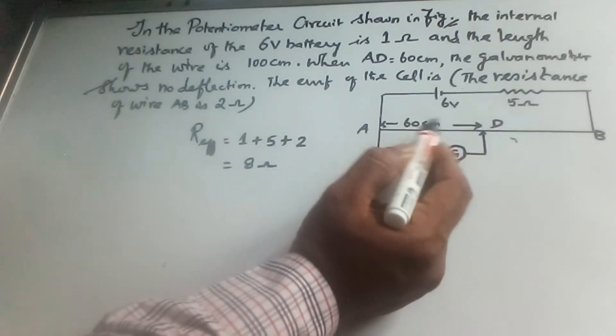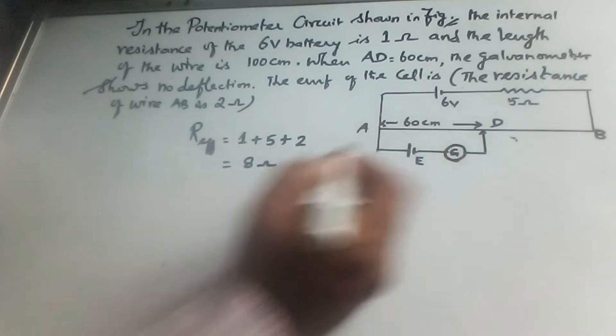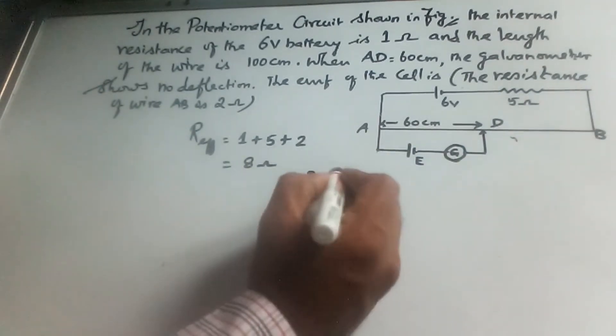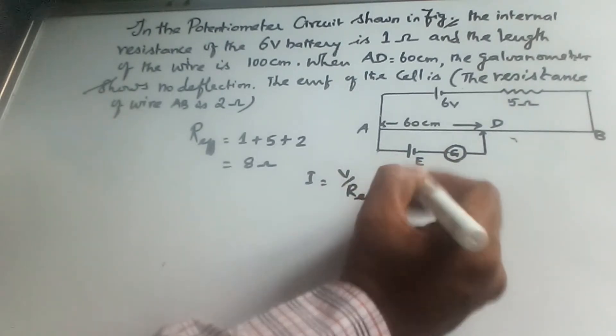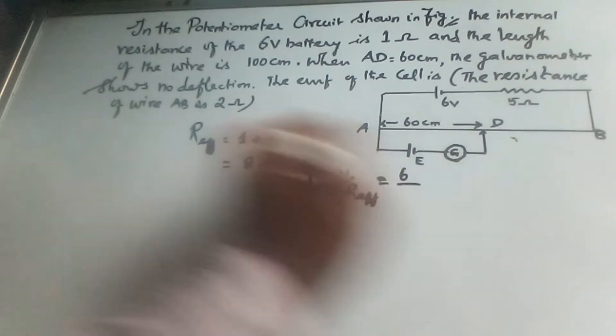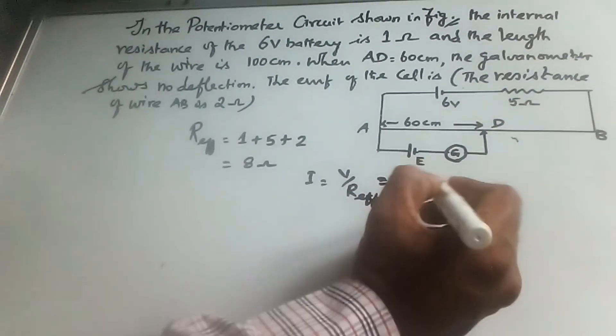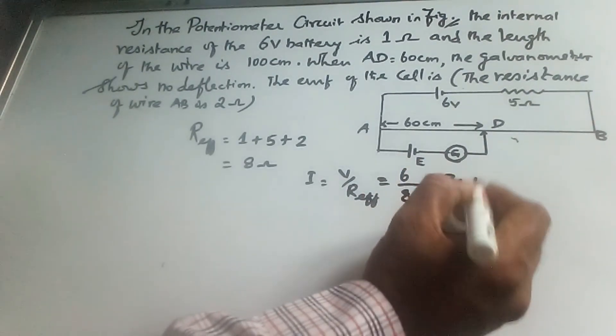The current I equals V by R effective. V is 6 volt, 6 by R effective 8 ohm gives a current of 3 by 4 amp flowing through AB section.